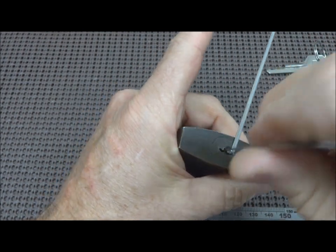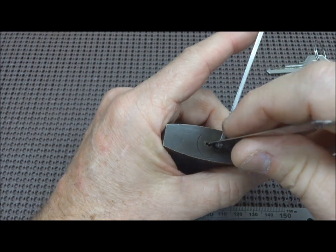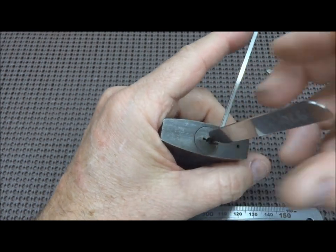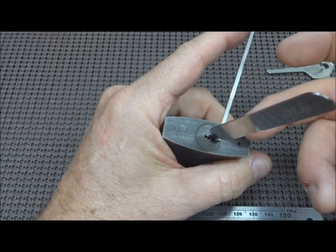This is one where I'm going to put the tension wrench in and stick the pick all the way to the rear. It's a wide keyway so we have to go just a little bit at an angle.